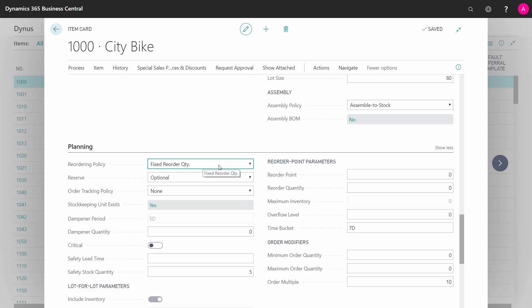And if I have fixed reorder quantity, I could add here a reorder point, reorder quantity, and I have my safety stock. So for instance, here I could set a reorder point being 50, a reorder quantity being 100, and the safety stock being 5, as an example.